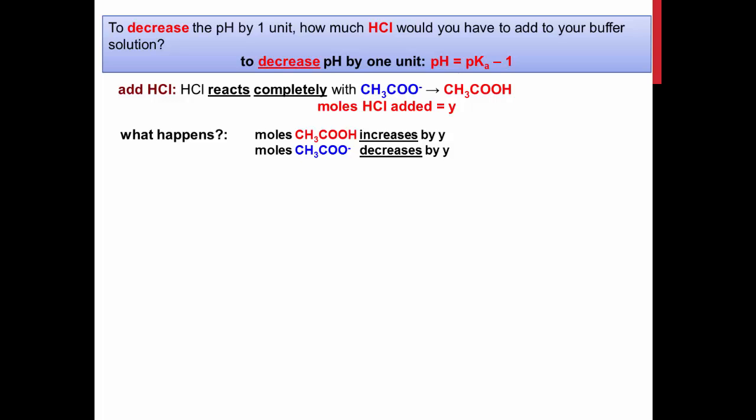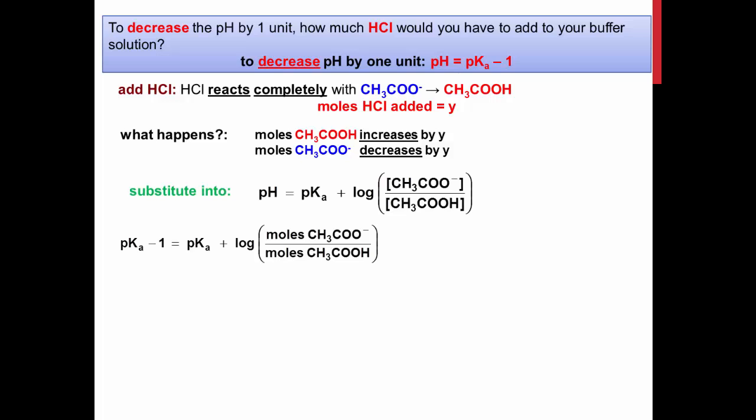As the reaction occurs, the number of moles of acetic acid increase by Y, while the moles of acetate decrease by Y. Substituting everything back into the Henderson-Hasselbalch equation gives the expression pKa minus 1 equals pKa plus the log of the moles of acetate minus Y divided by the moles of acetic acid plus Y. The pKa values cancel.